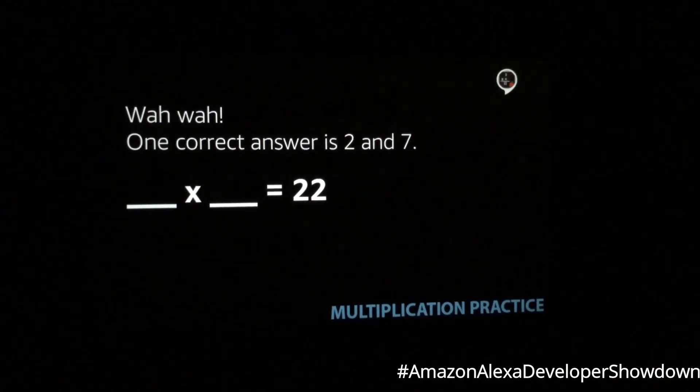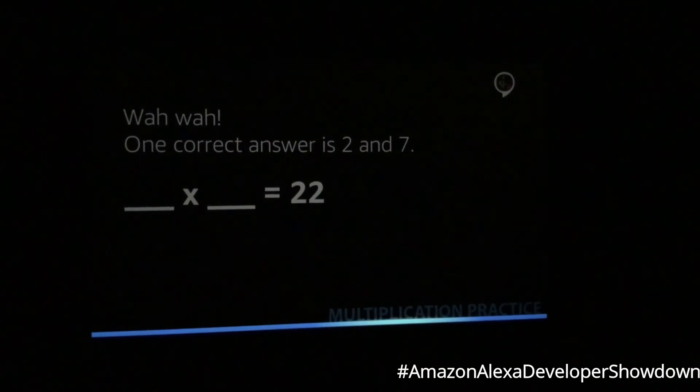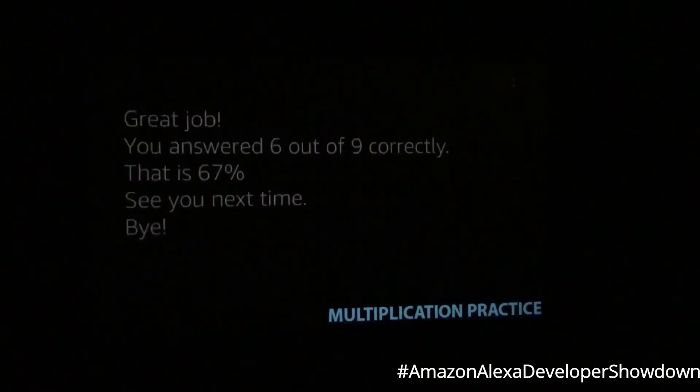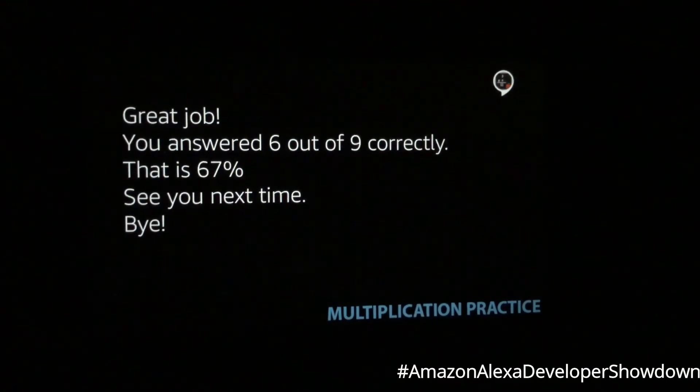What two numbers multiplied together equals 22? Stop. Great job. You answered 6 out of 9 correctly. That is 67%. See you next time. Bye.